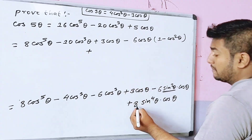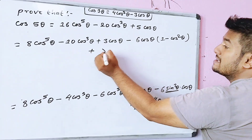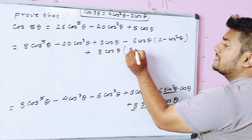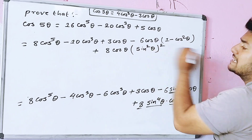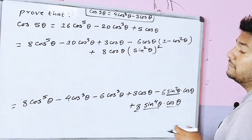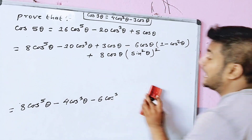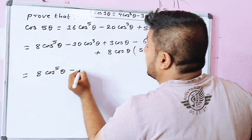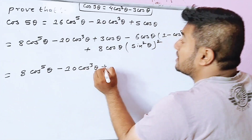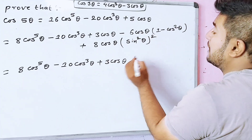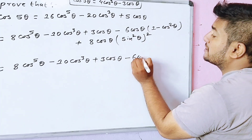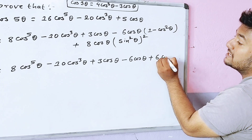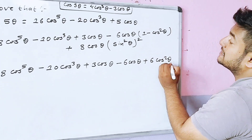This means we get cos theta plus 8 cos theta. Collecting the cosine terms: 8 cos to the power 5 theta minus 10 cos cubed theta plus 3 cos theta. Now we multiply minus 6 cos theta into (1 minus cos squared theta), giving minus 6 cos theta plus 6 cos cubed theta.